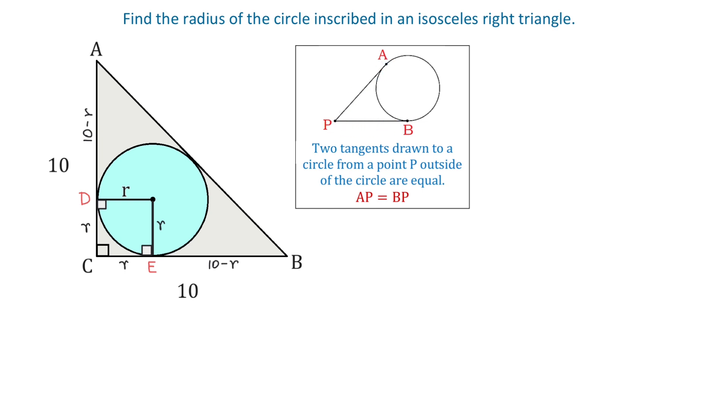Now, in our problem, let this point of tangency be point F and point A is a point outside the circle. Then, according to this theorem, if AD is 10 minus R units, then AF is also 10 minus R units. And if BE is 10 minus R, then BF is also 10 minus R. So, notice that point F is the midpoint for AB.